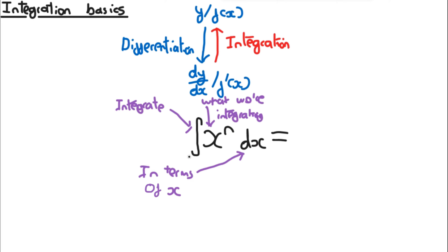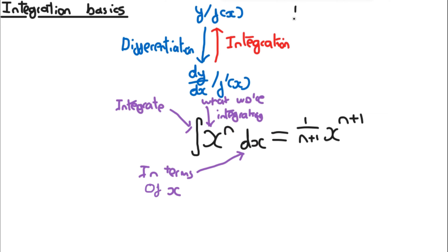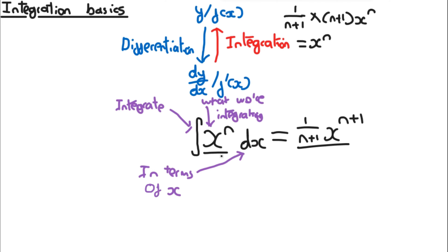The integral of x^n dx is equal to 1/(n+1) · x^(n+1). This makes sense if you think about it, because integration is just the opposite of differentiation. If you differentiate 1/(n+1) · x^(n+1), you get 1/(n+1) times (n+1)x^n, and the (n+1) terms cancel out, leaving just x^n. So integration is the opposite of differentiation, and ∫x^n dx = x^(n+1)/(n+1).